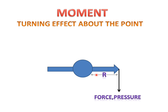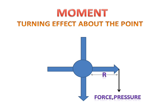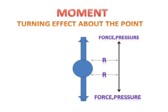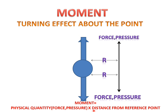This is the distance between the reference point and the corner of the object. If we apply force or pressure at that point, then a turning effect can be obtained. If we apply this physical quantity in the opposite direction, then also a turning effect can be obtained. So Moment is the physical quantity multiplied by the perpendicular distance from the reference point — this is called Moment.